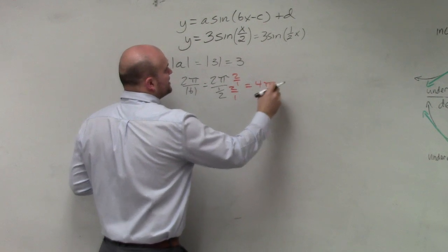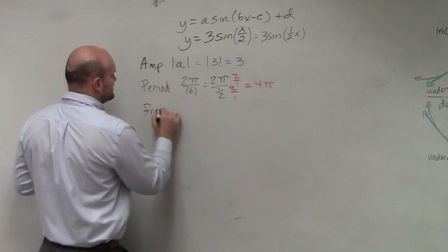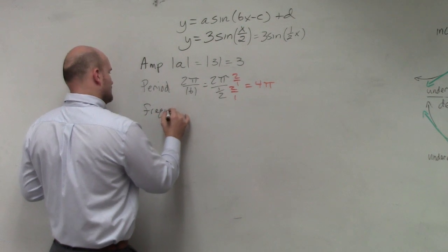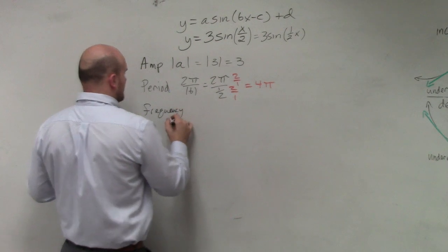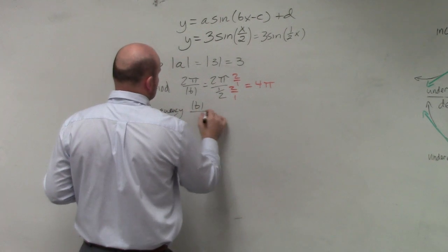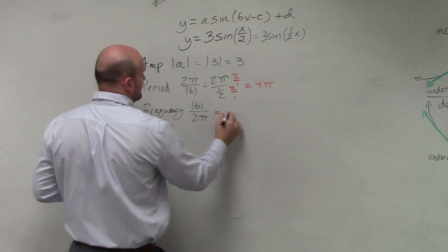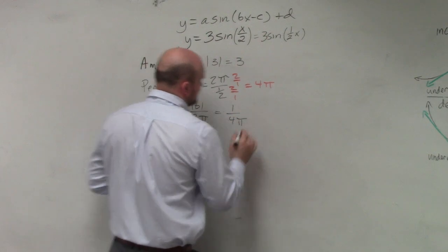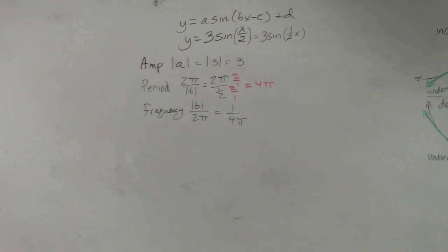So the period is going to be 4π. And remember, the frequency is just the reciprocal of your period, so that would be 1 over 4π. OK? So the fraction thing gets a lot of students. Just make sure you're really careful with that.